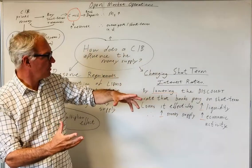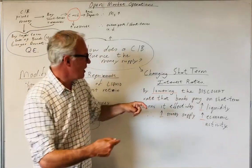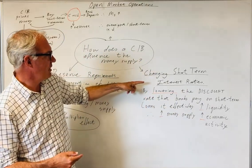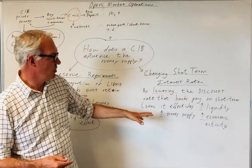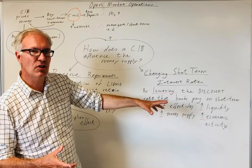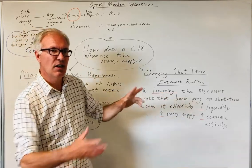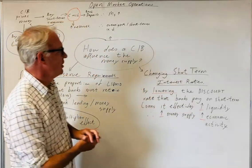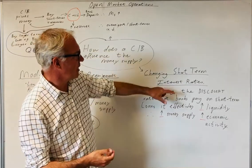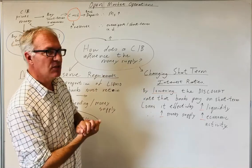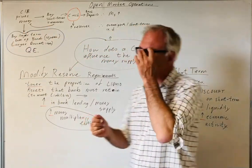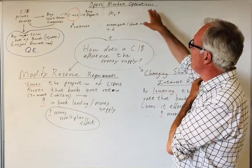It could be the other way around—they could increase the discount rate and that will reduce liquidity, reduce the money supply, and reduce economic activity, other things being equal. So changing the discount rate is a key way the bank can control the money supply.